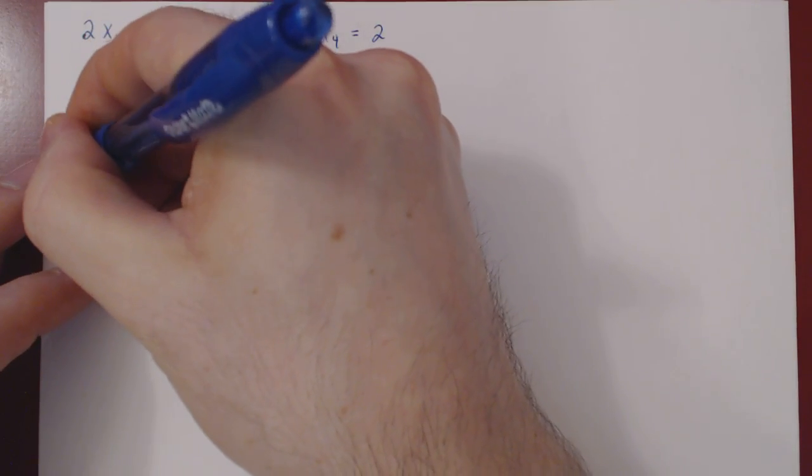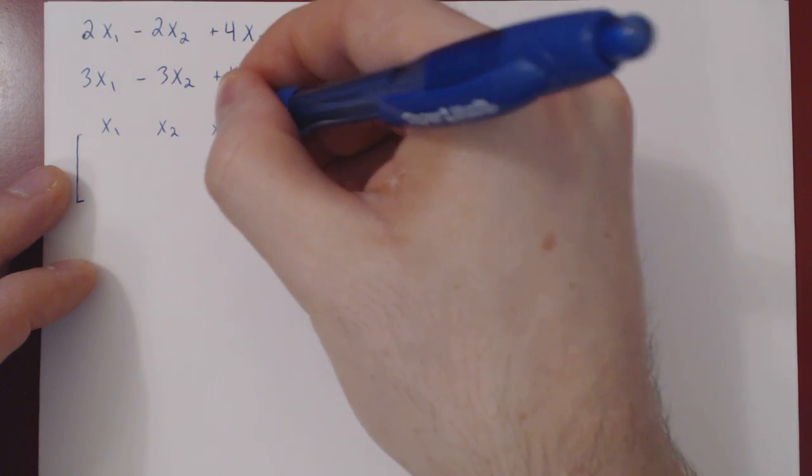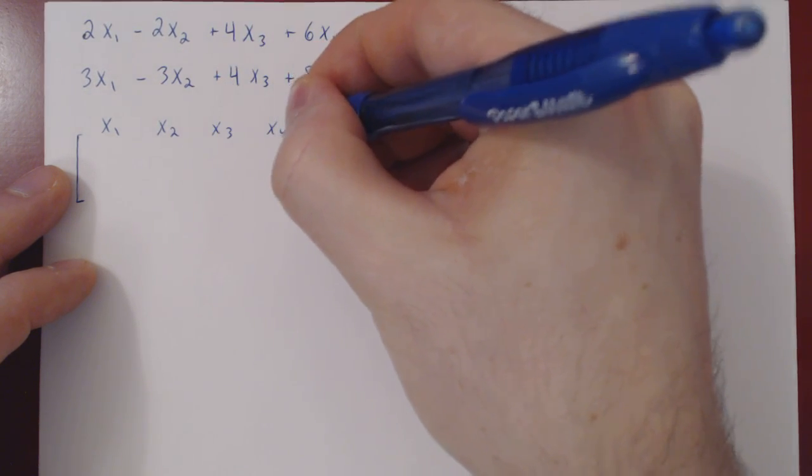So as always, we construct the corresponding augmented matrix. We will keep the order as it is, so x1, x2, x3, x4.